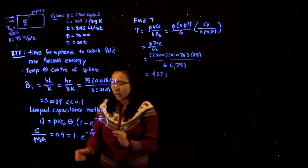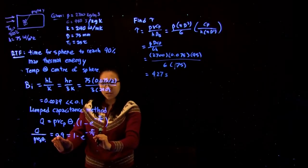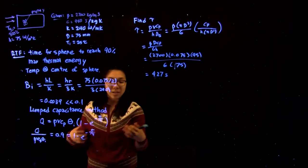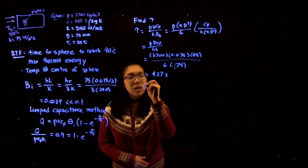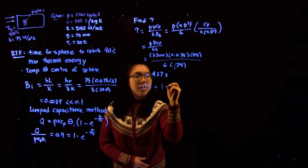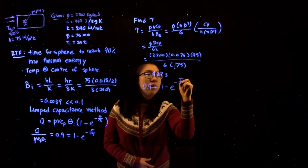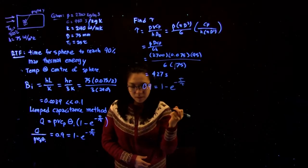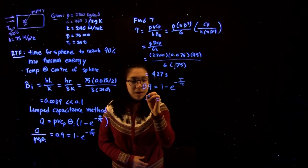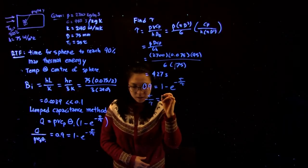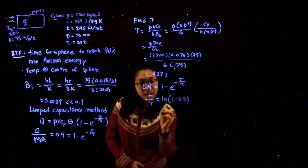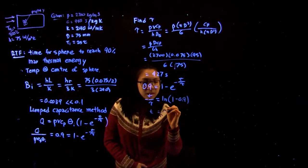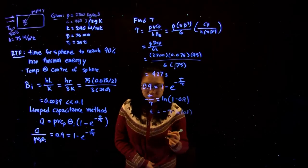Now we want to solve this equation because the only thing we don't know is T, the time to reach 90% heat transfer. We have 0.9 equals 1 minus e to the minus T over tau, giving us minus T over tau equals ln of 1 minus 0.9.